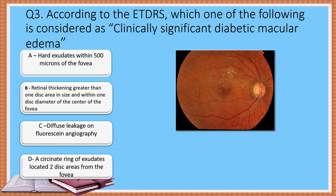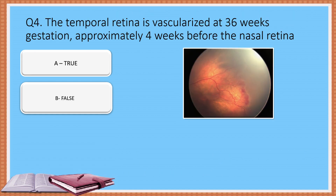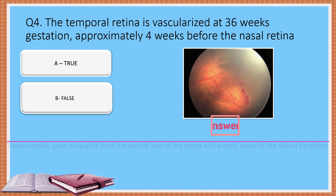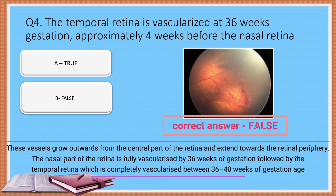Question 4: The temporal retina is vascularized at 36 weeks of gestation, approximately 4 weeks before the nasal retina. Is the statement true or false? The correct answer is Option B: False.